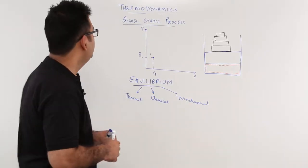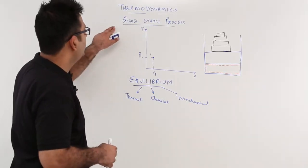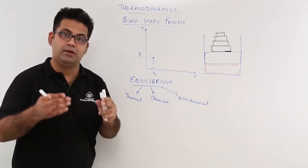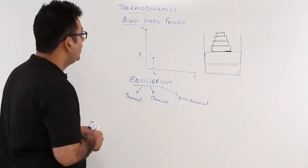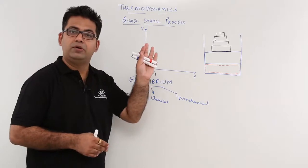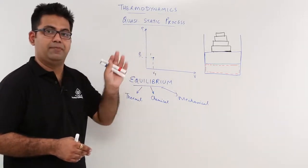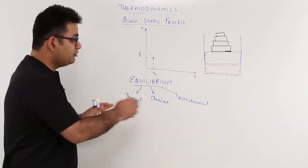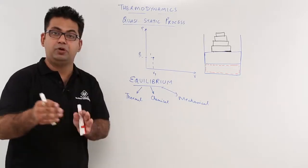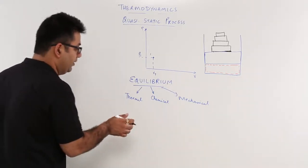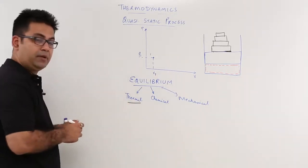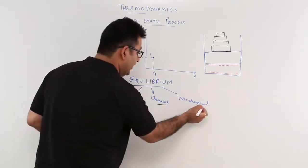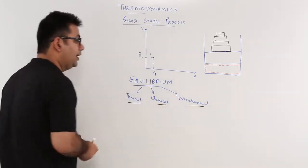Now let us pay attention to the quasi-static process and understand this in great detail. Before I talk about the quasi-static process, we need to understand what is equilibrium. There are three kinds of equilibrium we need to know: the first kind is thermal equilibrium, the second is chemical equilibrium, and the third is mechanical equilibrium.